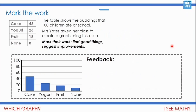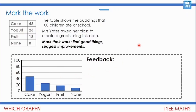Now your job is to look at these examples. The table shows the puddings that a hundred children ate at school. Mrs Yates asked her class to create a graph using this data, and the examples are provided — you're going to mark their work. Have a look at this graph. Is it being presented well? What's been done well? Is there anything you would improve? Pause the video and give your feedback.